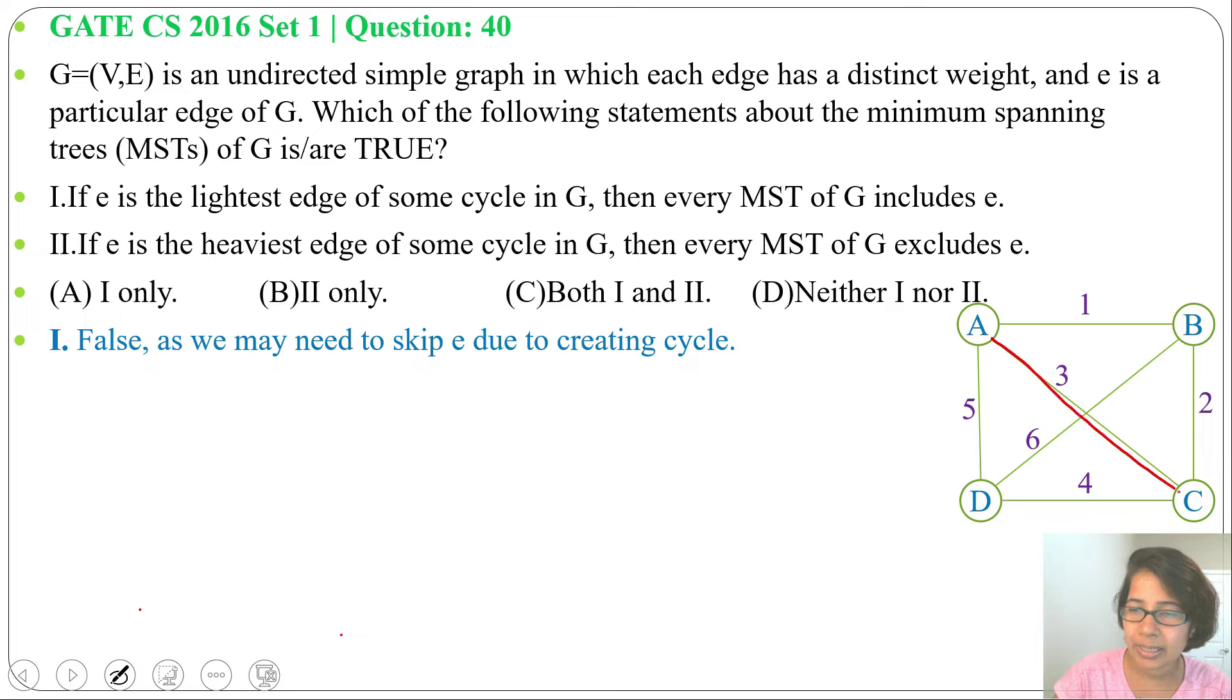Now, in A, C, D cycle, here weight is 5, weight is 4, weight is 3. If we will create minimum spanning tree, first we will include A, B, weight is 1.